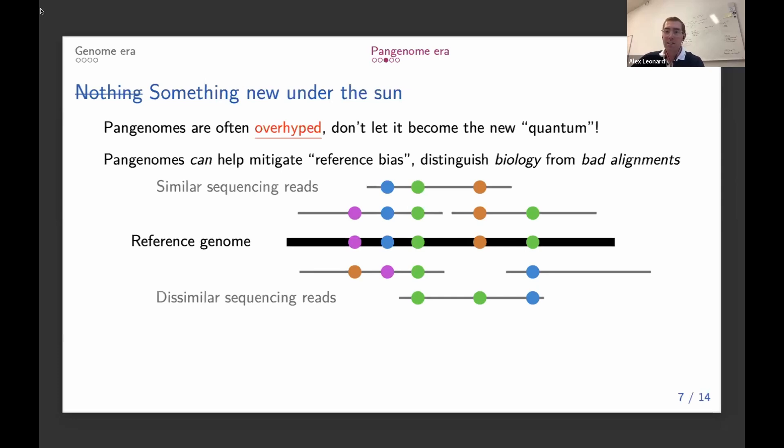Where if we can represent different alleles in our pangenome, it often can help reads align to the correct place, reducing false positives and increasing what was previously unmapped reads. So pangenomes do have uses, but it's worth remembering that this is ultimately something that we've all been doing for a long time, just in a slightly different way.